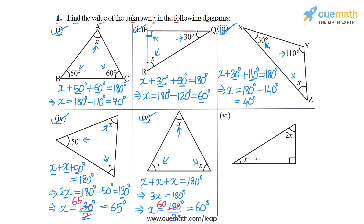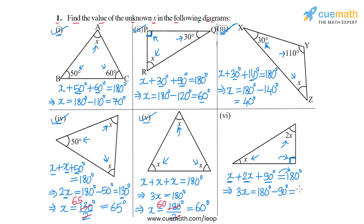In part 6 we have angle x, angle 2x, and an angle marked 90 degrees. So we can write x plus 2x plus 90 degrees is equal to 180 degrees. On the left side x and 2x give us 3x, and taking 90 degrees to the right side we get 180 minus 90, which is 90. So 3x is equal to 90. Dividing both sides by 3, x is equal to 90 divided by 3, which is 30 degrees. So x equals 30 degrees — the answer for part 6 — and with this we have completed question number 1.